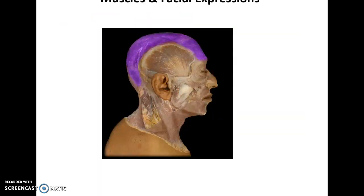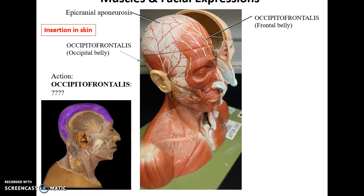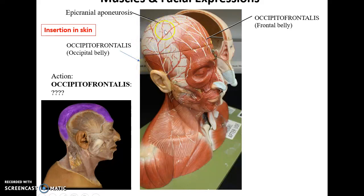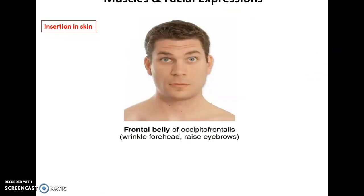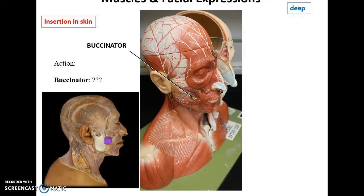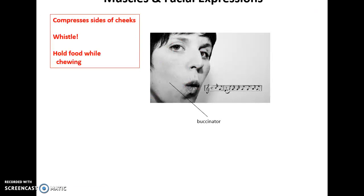Moving on to the head and the muscles that help give us our facial expressions. On our head, we have the occipitofrontalis muscle — a two-belly muscle. The frontal belly is over the frontal bone and the occipital belly is over the occipital bone. The two bellies are connected by the epicranial aponeurosis. It inserts into the skin and allows you to wrinkle your forehead and raise your eyebrows. Then we have the buccinator muscle, a very deep muscle on the lateral sides of the oral cavity. It inserts into the cheeks and helps compress the sides of the cheeks, which is helpful when whistling and also helps hold and move food while chewing.